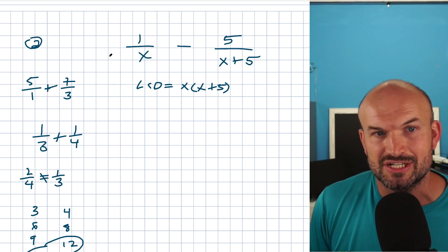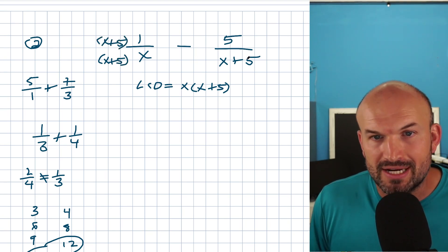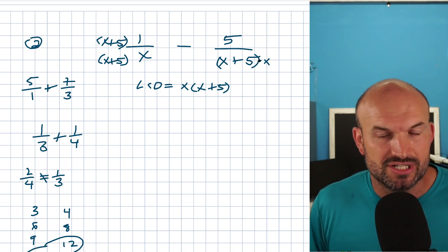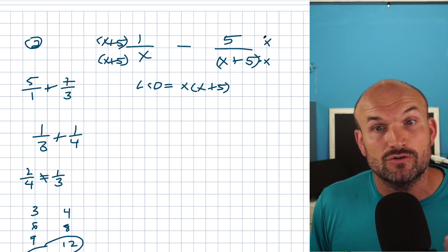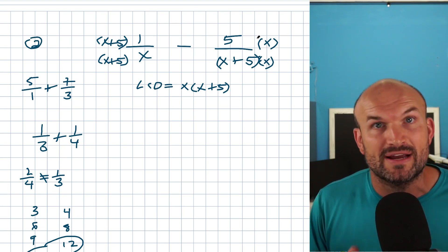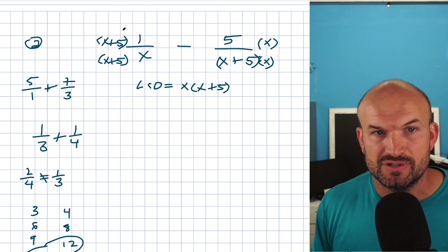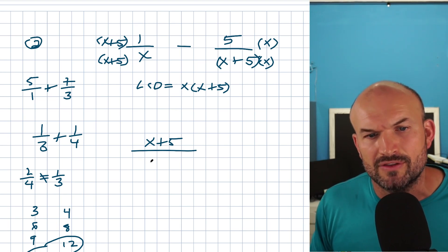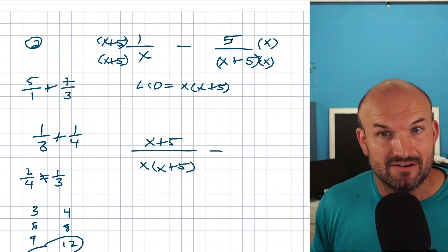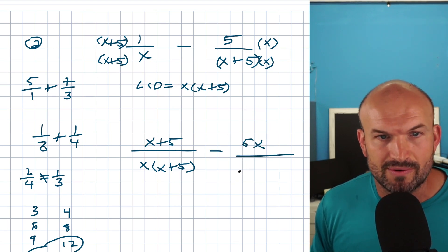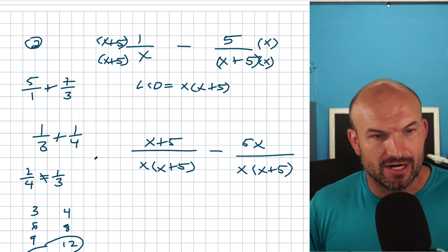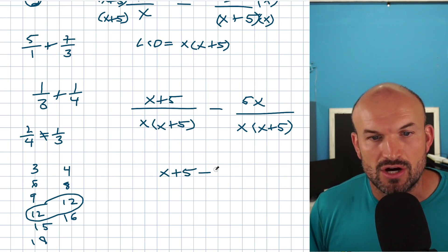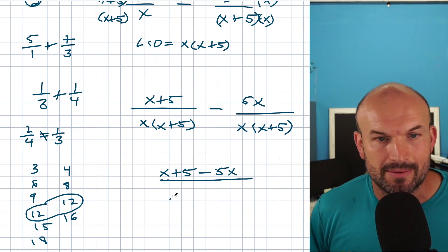It's very important to use parentheses whenever you have an expression, because you want to make sure you're applying the distributive property correctly. So I'll simplify: X plus five times one is just X plus five. On the right-hand side, I'll write this as X times X plus five, then minus five times X which is 5X, all over X times X plus five. Now that I have the common denominator, I can rewrite everything as one big fraction: X plus five minus 5X all over X times X plus five. Combining like terms, X minus 5X is negative 4X, so the final answer is negative 4X plus five, all over X times X plus five.